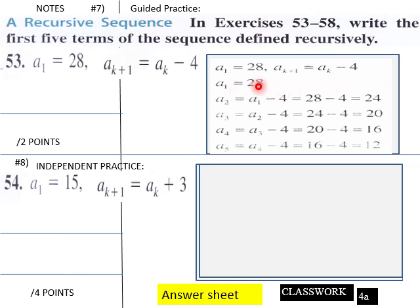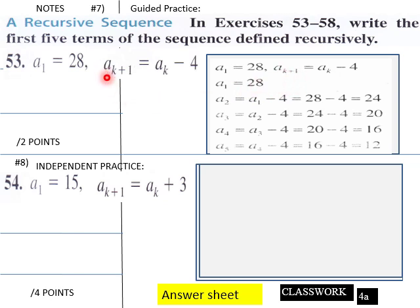If a₁ = 28, then a₂ = a₁ − 4. So a₂ = 28 − 4 = 24.